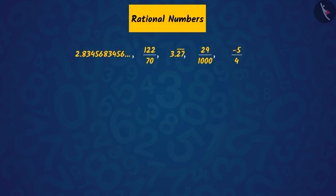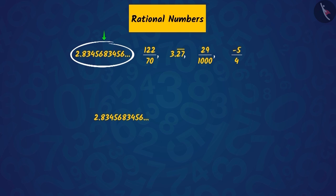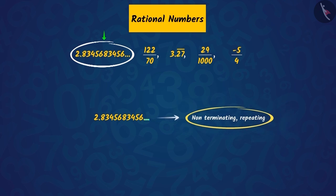Now, let's move to rational numbers. Moving forward, if we observe the decimal expansion of this number, we can see that these three points at the end of the number tell us that the decimal expansion is non-terminating, and the digits after the decimal — 8, 3, 4, 5 and 6 — are recurring.